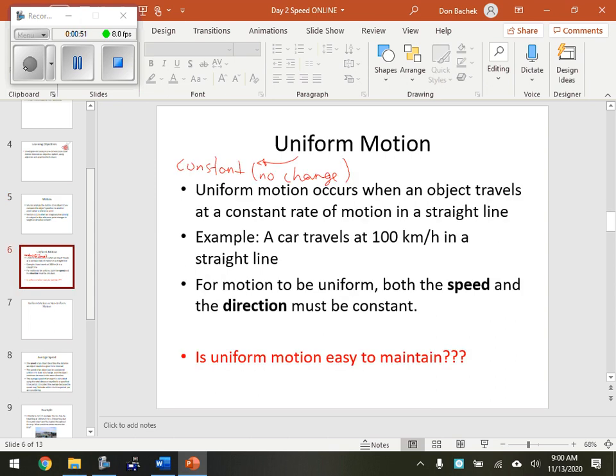Uniform motion. Uniform motion means constant or no change. Uniform motion occurs when an object travels at a constant rate of motion, constant speed in a straight line. An example, the car's traveling at 100 kilometers an hour in a straight line. For motion to be uniform, both speed and direction must be constant.